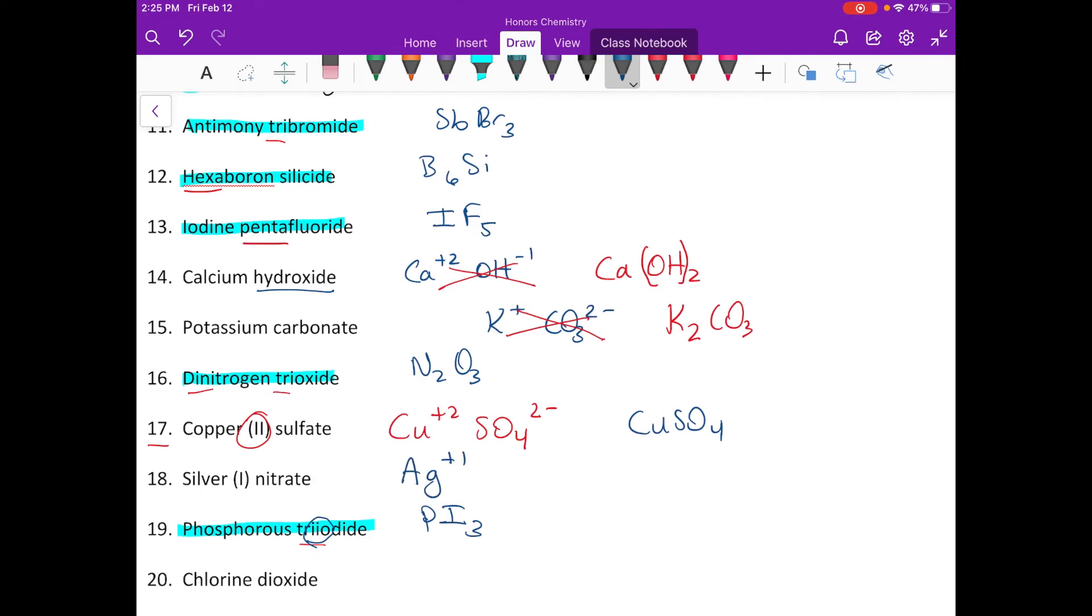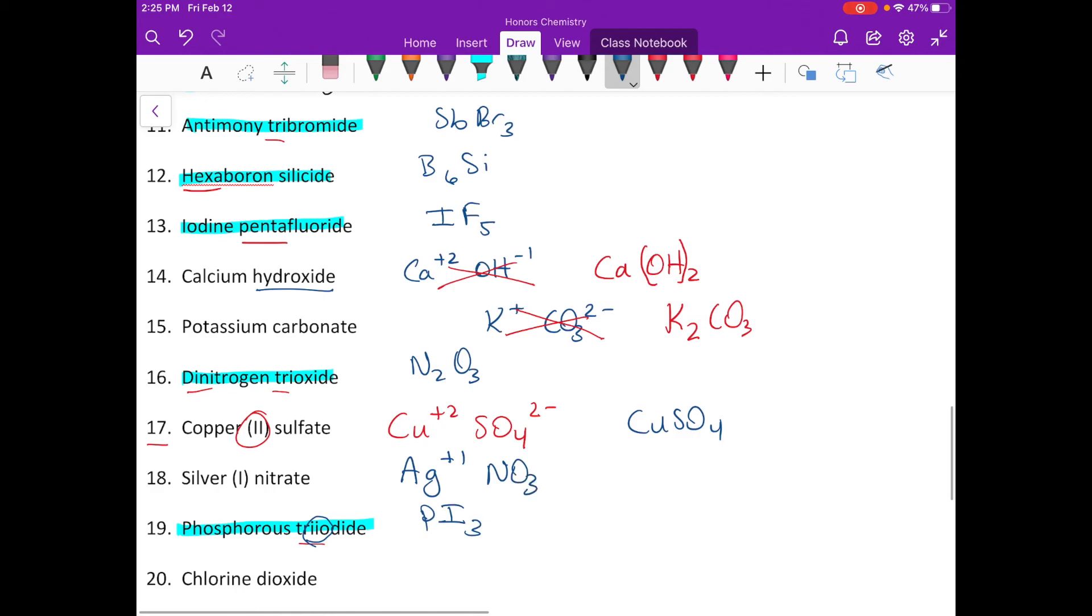And oh, I forgot a covalent, chlorine dioxide, very easy to spot. How did I miss it? There was the di telling me right there. So now you folks, you've been naming everything, you've learned all the possible ways to name. The only thing we didn't practice in here was a couple acids, but that is everything thrown together aside from the acid.